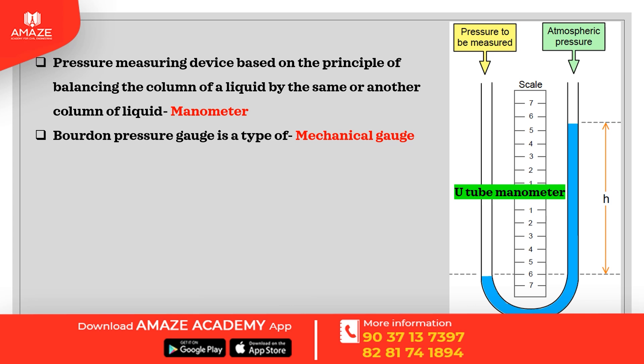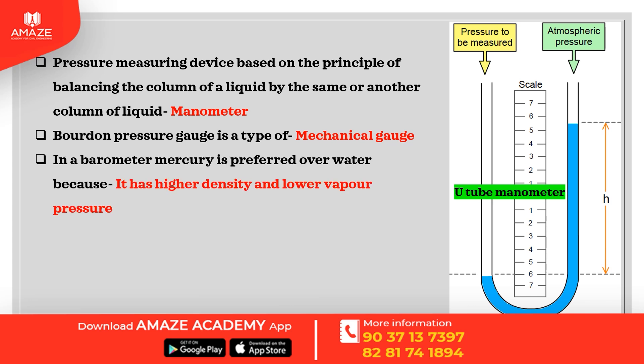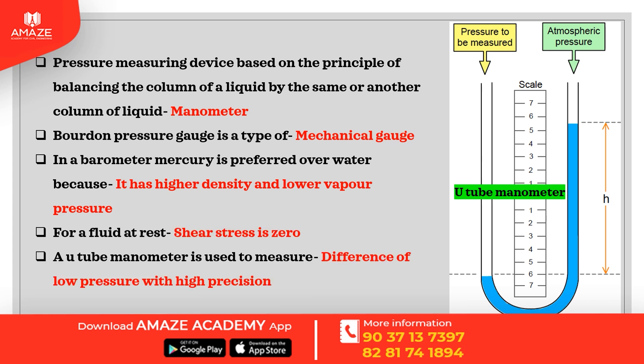Bourdon pressure gauge is a type of mechanical gauge. In a barometer, mercury is preferred over water because it has higher density and lower vapor pressure. For a fluid at rest, shear stress is zero. A U-tube manometer is used to measure the difference of low pressure with high precision.